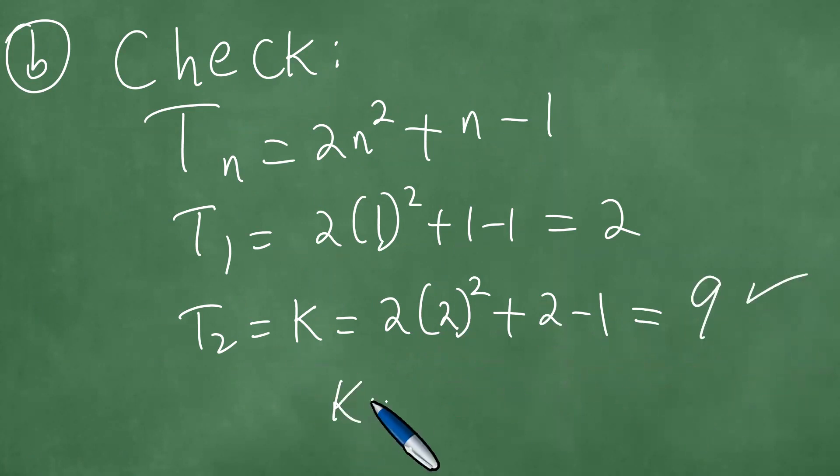Obviously, this just produced k equals 9, so we are done. We have solved this quadratic number pattern problem in detail. Thanks everybody for your attention, and goodbye to you.